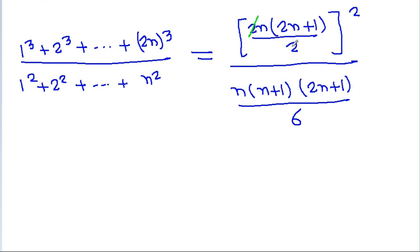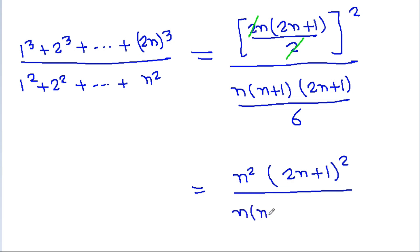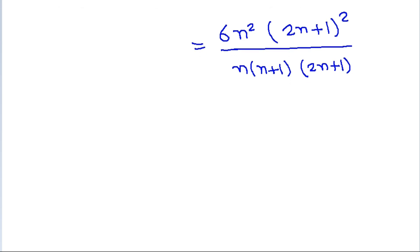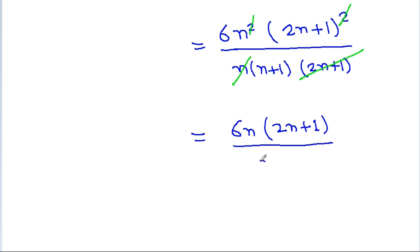The 2s cancel, and we get n²(2n+1)² divided by n(n+1)(2n+1), and the 6 comes to the numerator. Then n and n cancel, and (2n+1) also cancels, and we get 6n(2n+1) divided by (n+1).